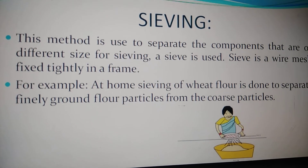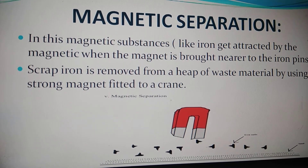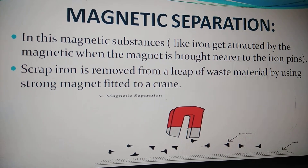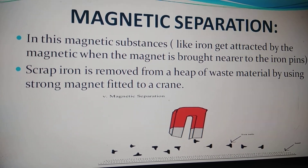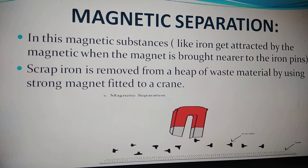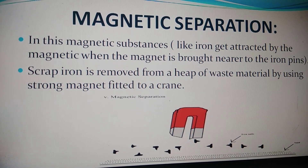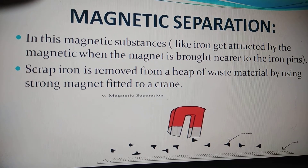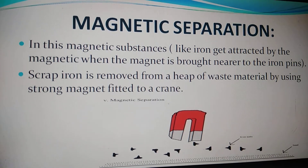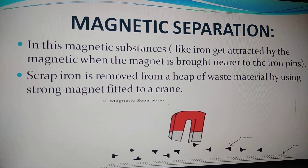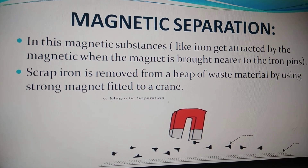The next method is magnetic separation. Here, magnets are used to separate scrap iron or magnetic material from a heap of waste materials. Strong magnets are fitted to a crane, and the scrap iron is removed from the heap of waste garbage using these magnets. This scrap iron is then melted and can be reused. This method separates magnetic material by bringing the magnet near it.